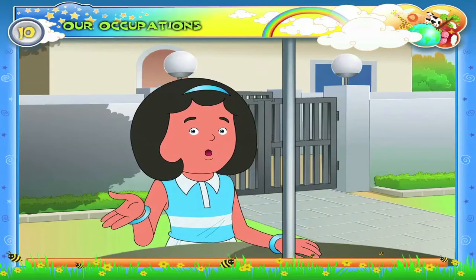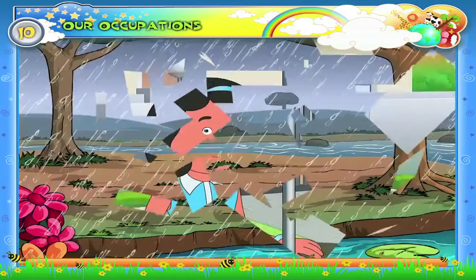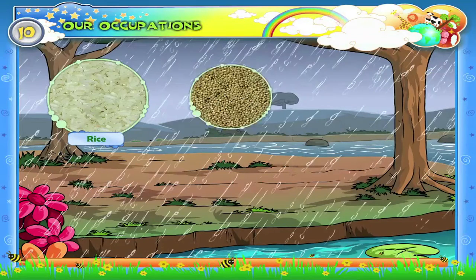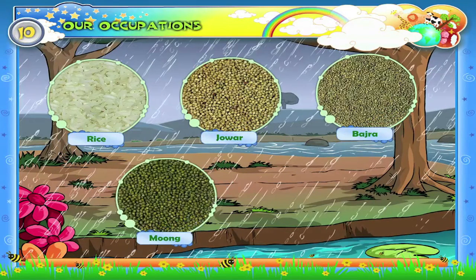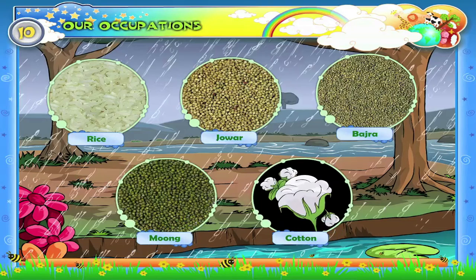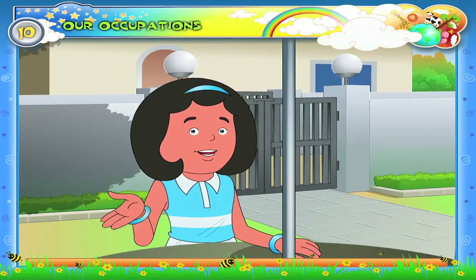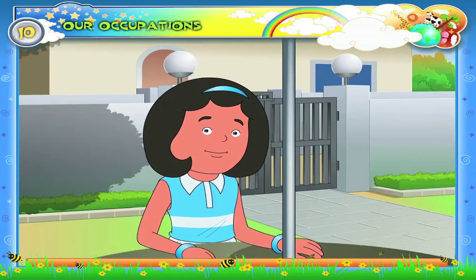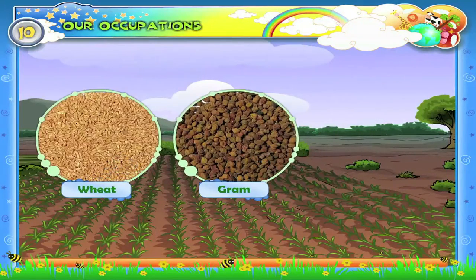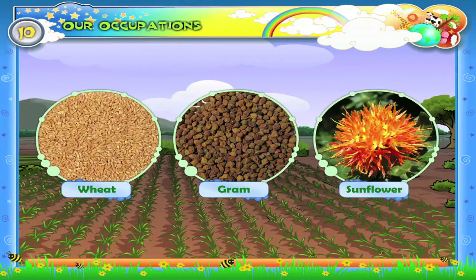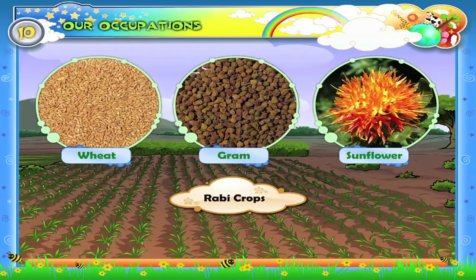What is grown in the Kharif season? Rice, Jwar, Bajra, Moong and Cotton are cultivated during the rainy season, so they are called Kharif crops. What are Rabi crops? Wheat, gram and sunflower are cultivated in the winter season, therefore they are called Rabi crops.